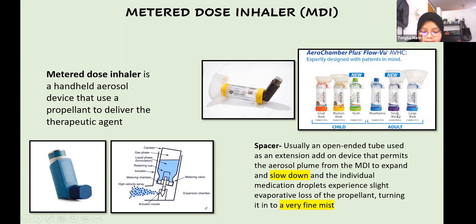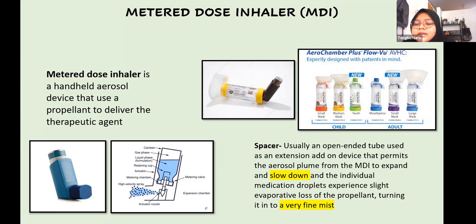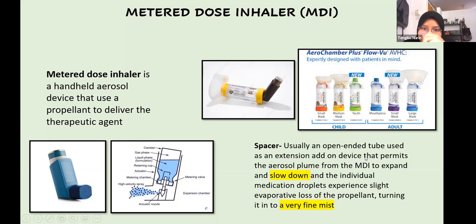MDI is usually used along with a spacer. The spacer is indicated for patients with difficulty coordinating inhalation and actuation, and for patients who use MDI containing glucocorticoids, especially at medium to high doses. The spacer is an open-ended tube that slows down the aerosol flow from the MDI so that droplets can be carried deep into the lungs instead of hitting the back of the throat. It also turns the droplets into a very fine mist that most patients will not taste as they breathe it in.